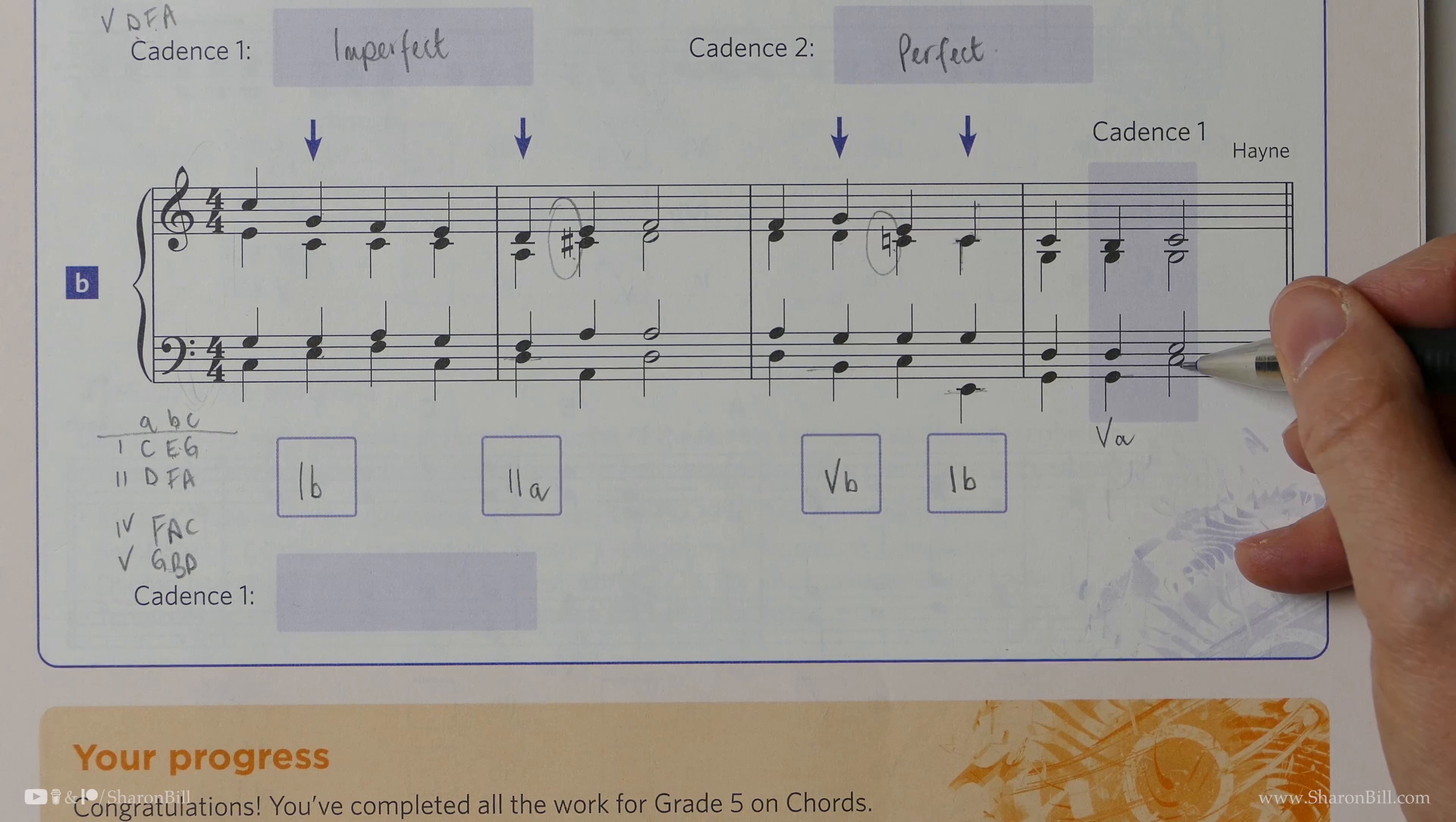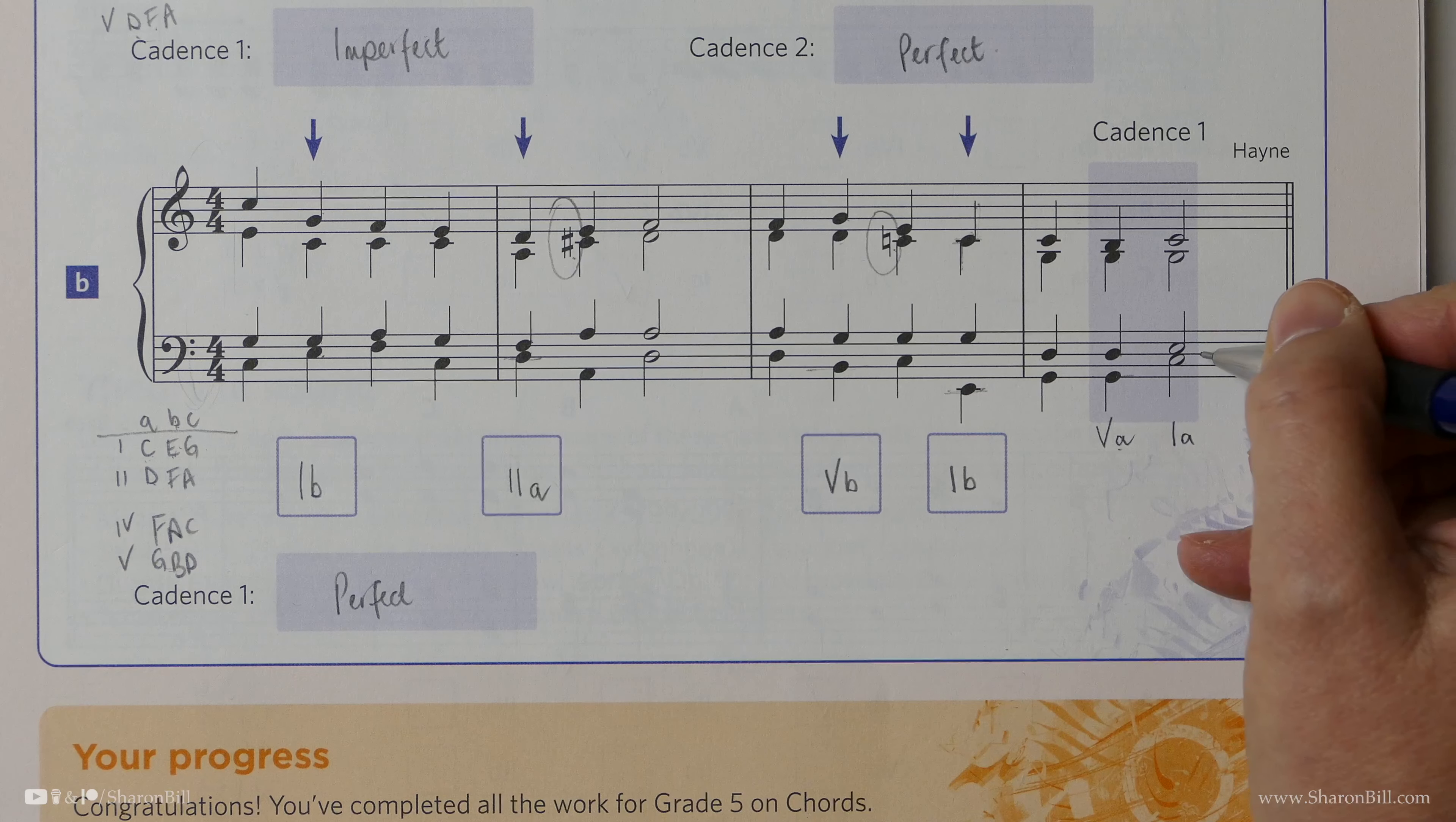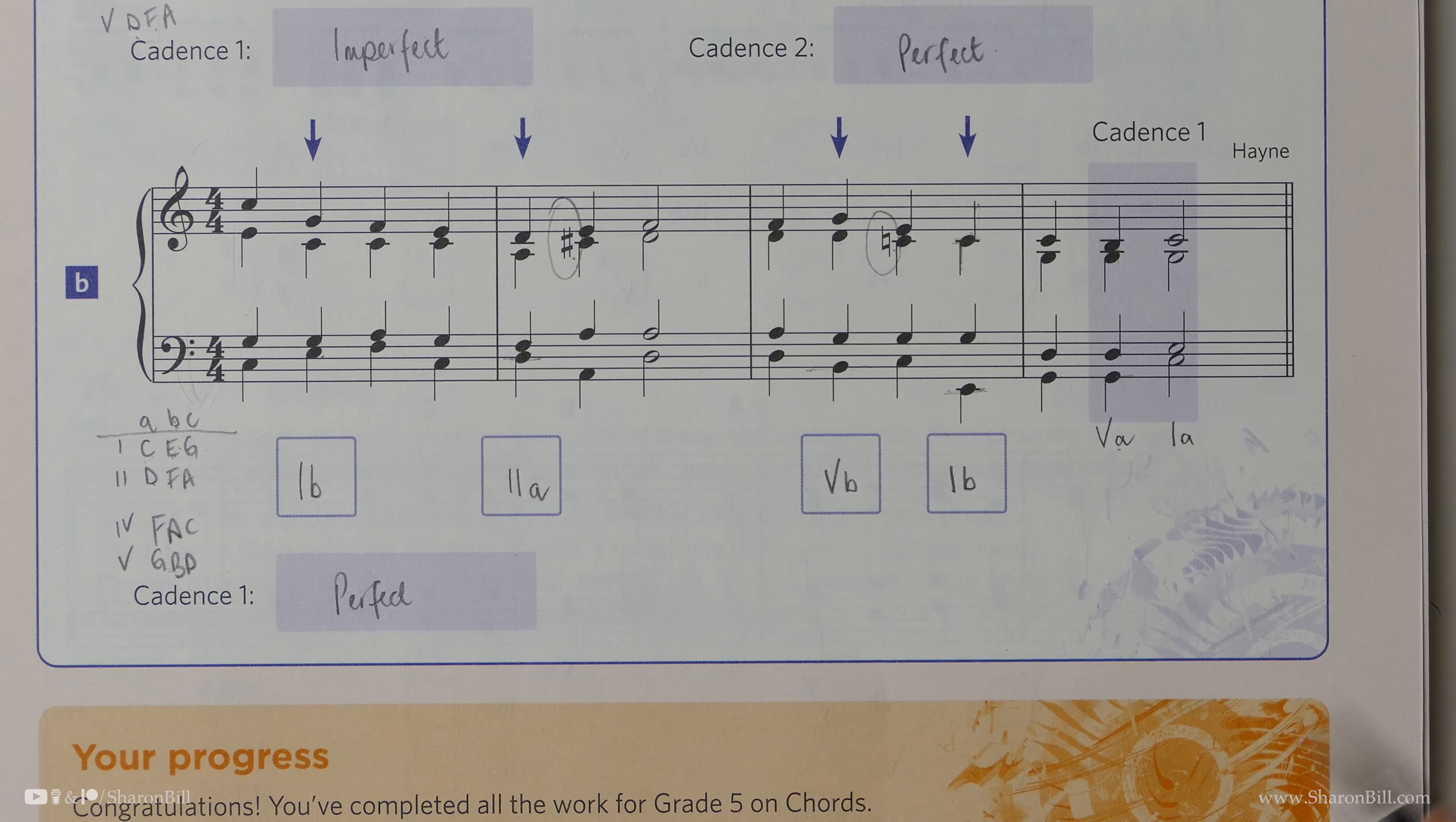And then we have C, E, G, C. That's a chord 1. C is the bass. It's in root position 1A. And 5 to 1 is our perfect cadence, which brings the piece of music to a complete finish, kind of a ta-ta ending. That's the perfect cadence to this little piece of music. It's the perfect cadence to the end of the exercise. And it's the perfect cadence to completely finish this chapter. So well done.